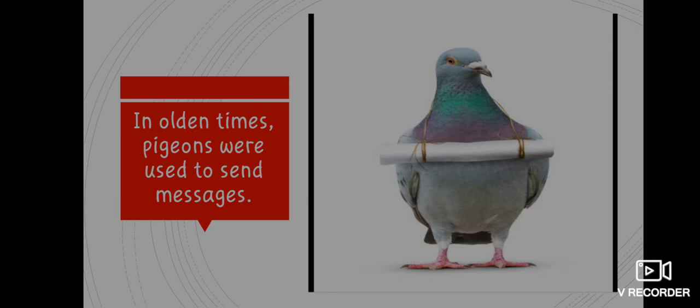Once upon a time, people living in one place communicated with people in another place by using pigeons. They wrote a message on a piece of paper and tied it to the leg of the pigeon. The pigeon would then fly to the destination, and the message would be opened and read. This is how messages were communicated in old times.